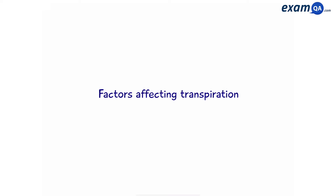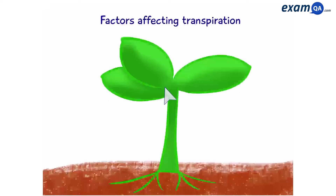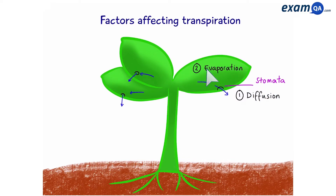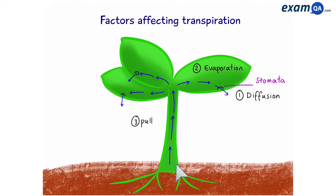Factors affecting transpiration. Transpiration is the movement of water through a plant. It starts at the leaves, where water diffuses out from the leaf to the surroundings through tiny holes in the bottom of the leaf called stomata. This causes water inside the leaf to evaporate and take the place of the water that has left, which then causes more water to be pulled up the plant through the stem and in from the roots, through vessels such as the xylem.